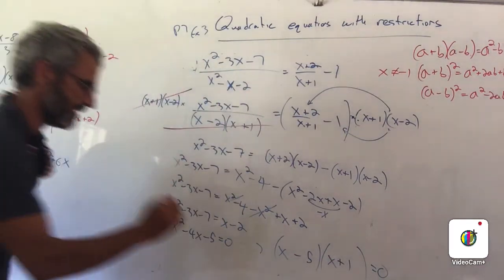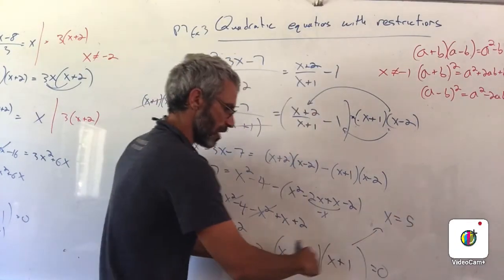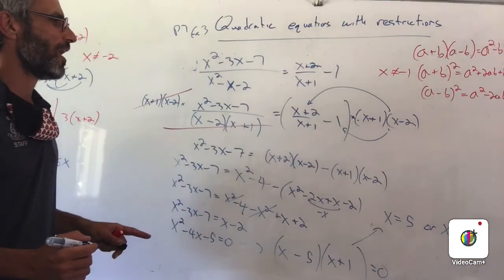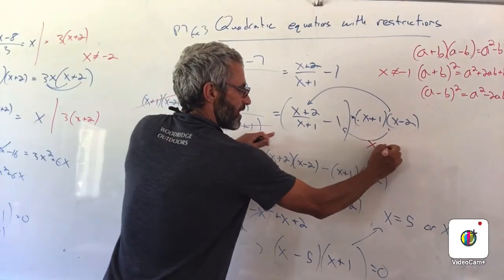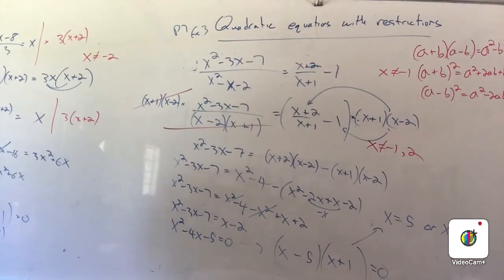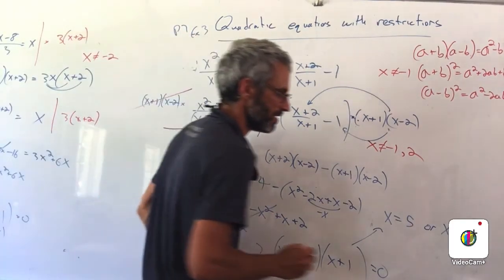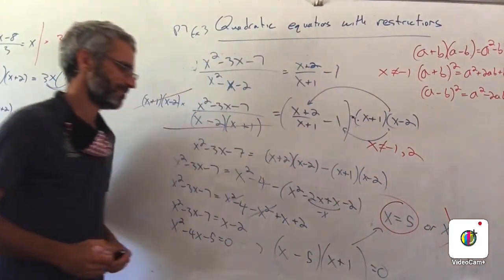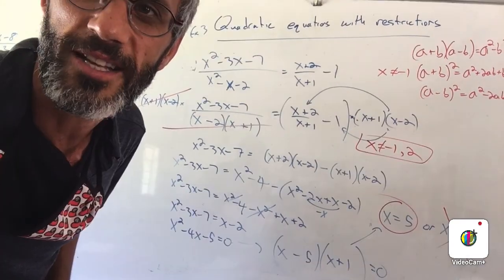What is the mistake that I did here? Not a mistake, but the way I'm writing the answers. x equal 5 or x equal negative 1. What did I do? What did I write? Restrictions. So let's quickly write them again. x not equal minus 1 or 2. Do we need to cancel any of the solutions? Yes. Which one? Cancel. Not politically correct. Out of here. x equal 5. That's it. Bye-bye.